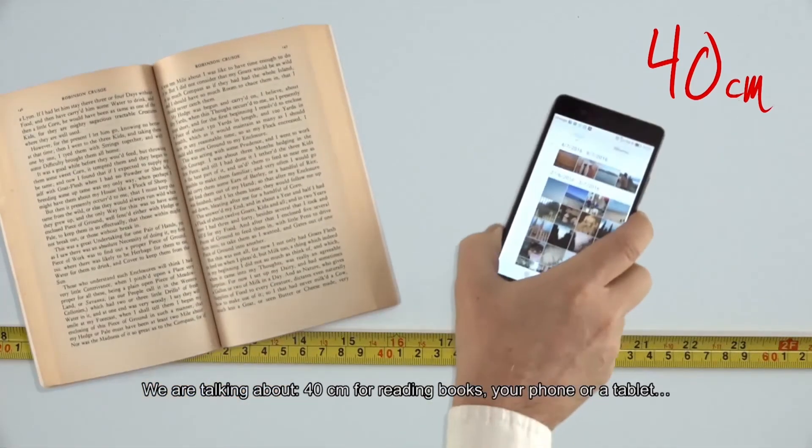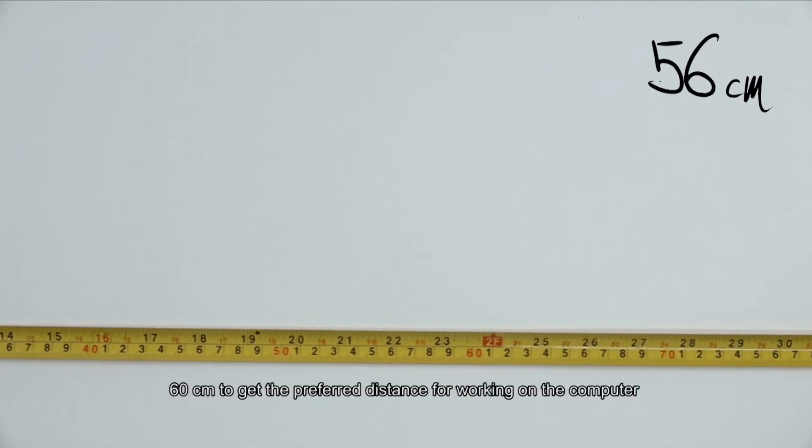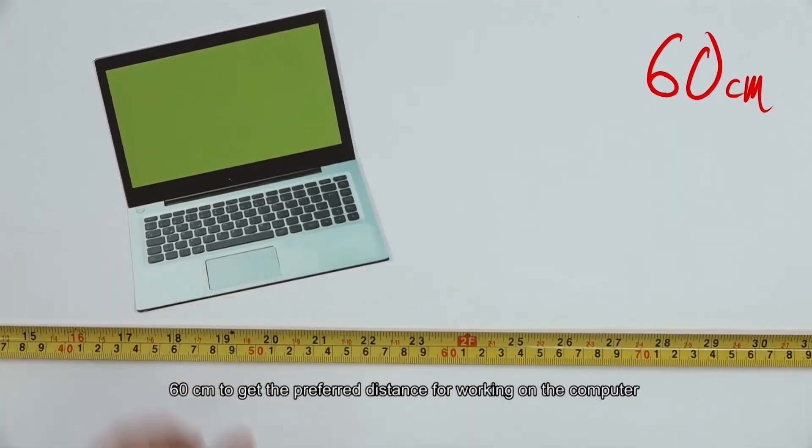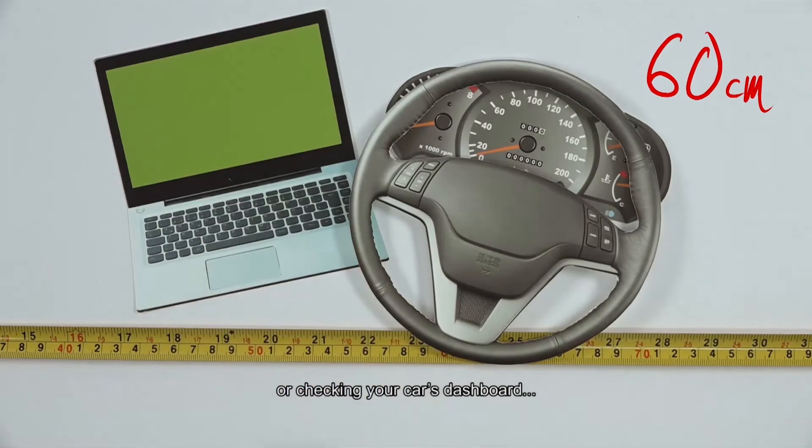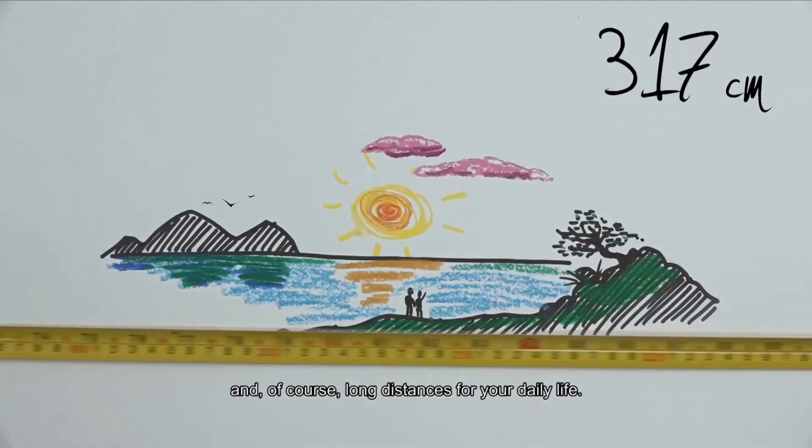We're talking about 40cm for reading books, your phone or a tablet, 60cm to get the preferred distance for working on the computer or checking your car's dashboard and, of course, long distances for your daily life.